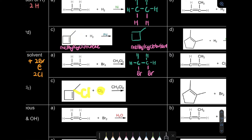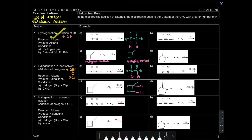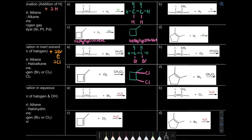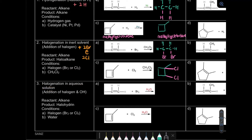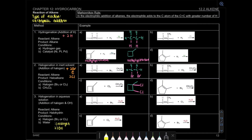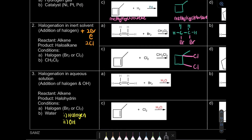Unlike when adding hydrogen - where you don't need to show it - when adding Cl or Br you have to show them. That's for hydrogenation and halogenation in inert solvent. For these 2 cases we are adding 2 identical atoms, so we don't need to apply the Markovnikov rule. But for the 3rd one we add 2 different things: one is our halogen and another is OH. So we need to apply the Markovnikov rule. It states the electrophile adds to the carbon with more hydrogen.